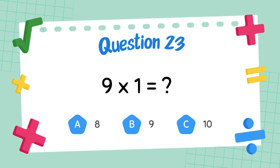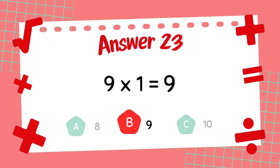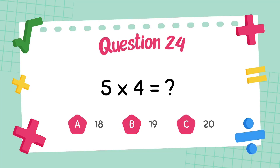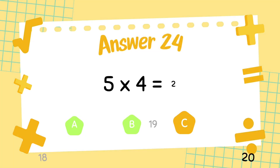What is 9 multiply 1? The answer is 9. What is 5 multiply 4? The answer is 20.